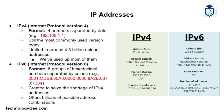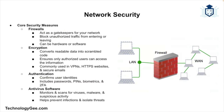Every device on a network needs a unique IP address — kind of like a digital home address. That's how data knows where to go. There are two versions: IPv4, which is still widely used but running out of unique addresses, and IPv6, the newer version with far more available addresses. Your phone, laptop, smart speaker — any device that connects to the internet has an IP address.